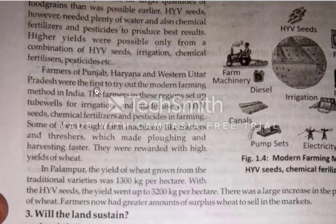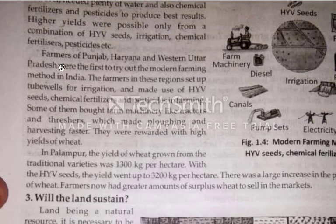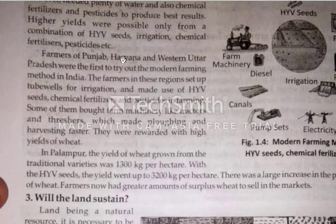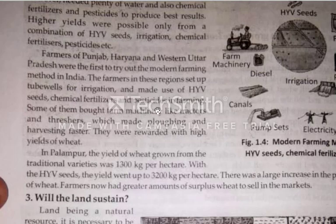Pesticide is also called insecticide. The farmers of Punjab, Haryana, and western Uttar Pradesh were the first to try out the modern farming method in India. The farmers in these regions set up tube wells for irrigation and made use of HYV seeds, chemical fertilizers, and pesticides in farming.